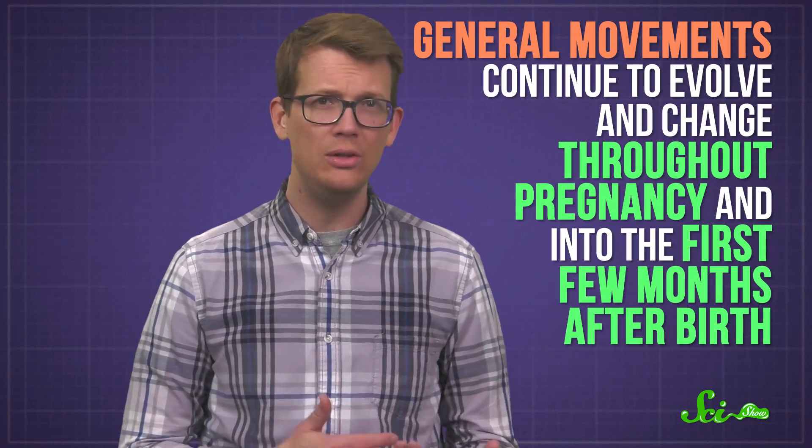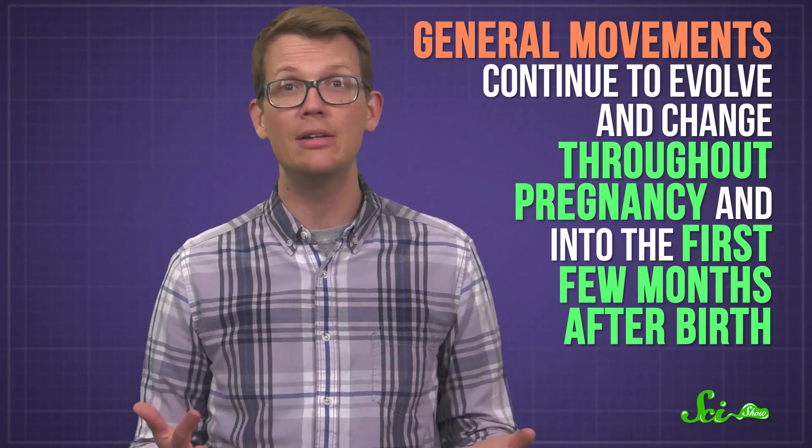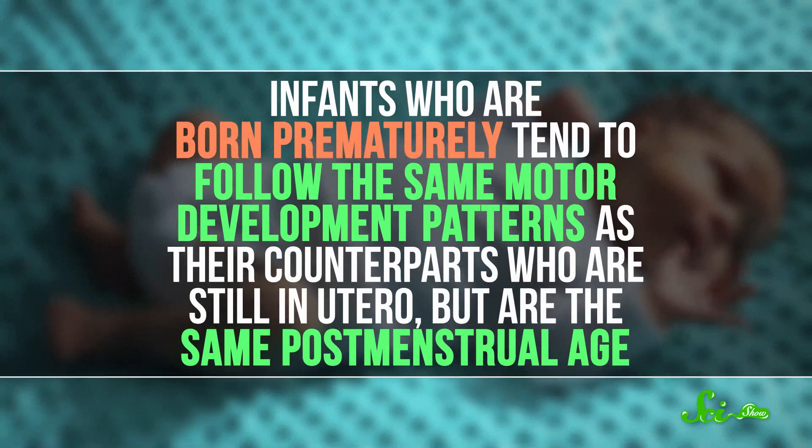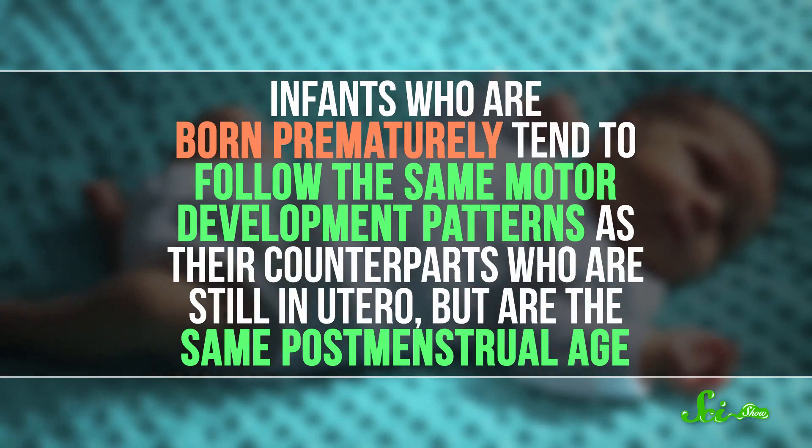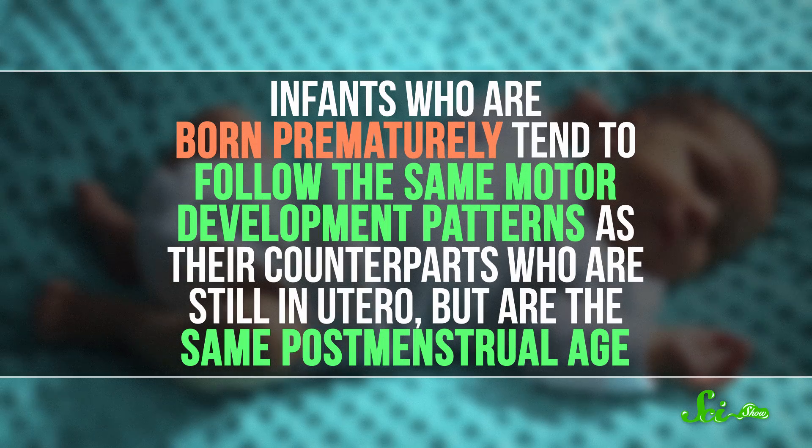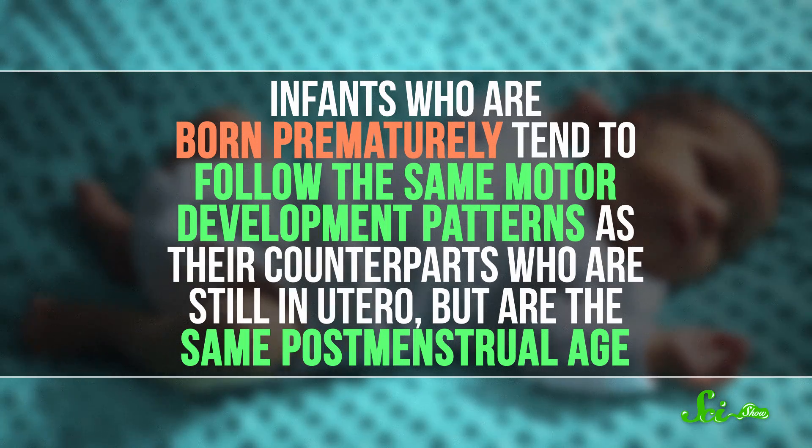General movements continue to evolve and change throughout pregnancy and into the first few months after birth. More or less. See, these changes in general movements occur at fairly predictable postmenstrual ages, but are not affected by birth. Infants who are born prematurely tend to follow the same motor development patterns as their counterparts who are still in utero, but are the same postmenstrual age.